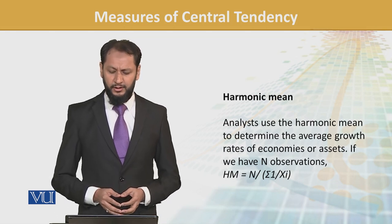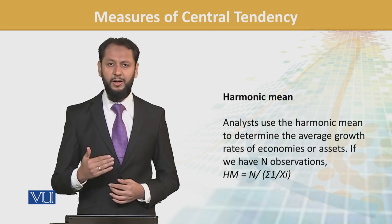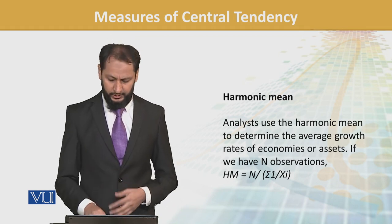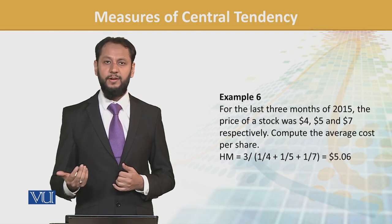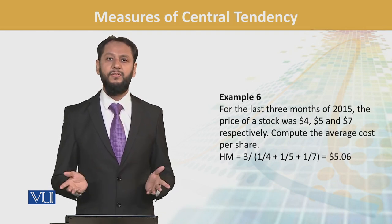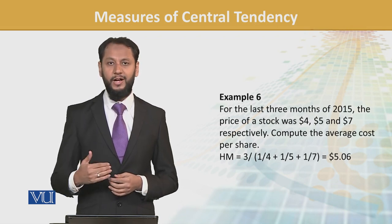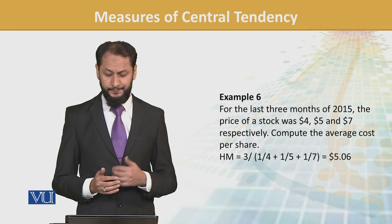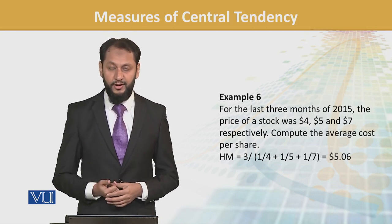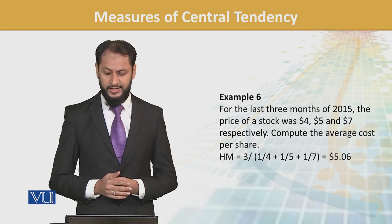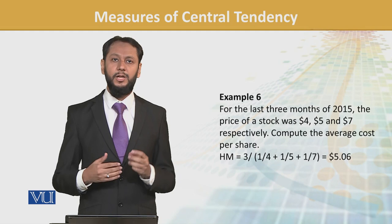Another measure is harmonic mean. Analysts use it in economics and to calculate average asset costs. It is basically computed as a fraction. For example, for the last 3 months of 2005 the price of stock was 4, 5, and 7. To compute the average cost using harmonic mean: compute 1/4, 1/5, and 1/7, take their average, and take the reciprocal. We get 5.06.